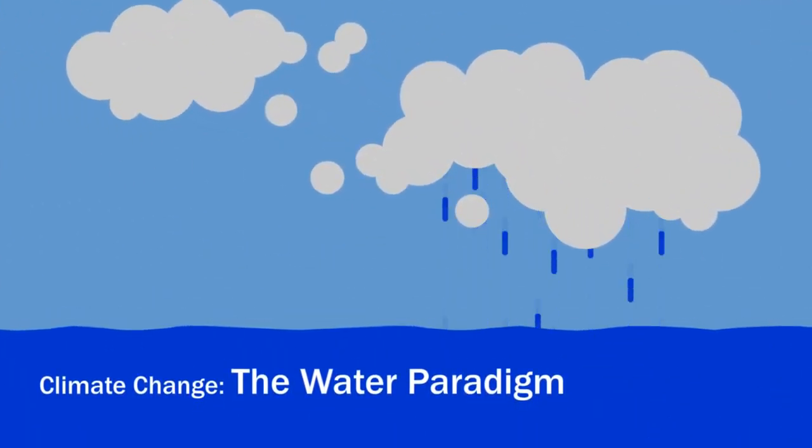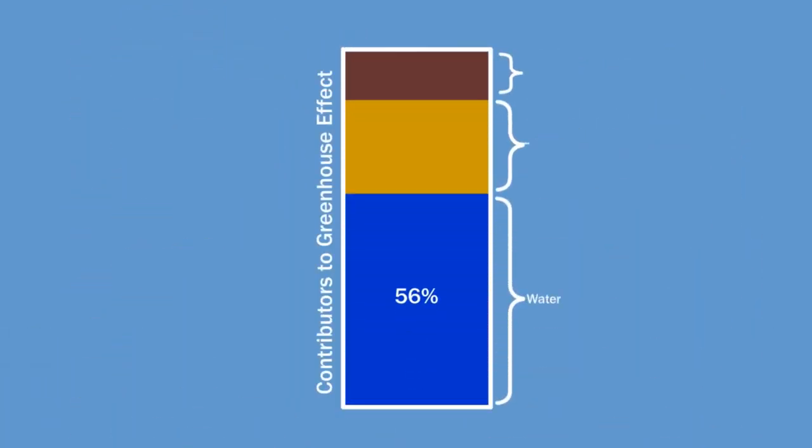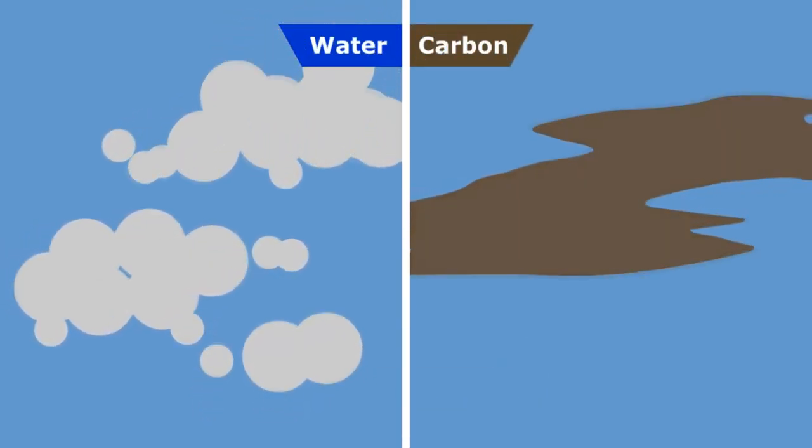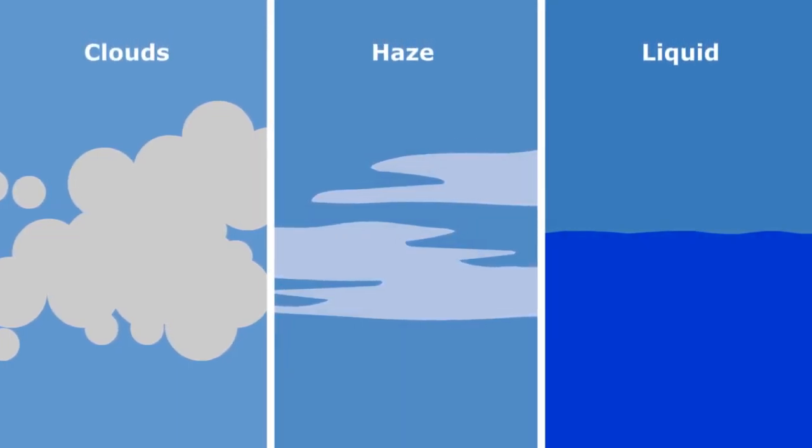One of these things is water. Water is actually the dominant greenhouse gas, but its global effects are difficult to measure because it doesn't spread out evenly in the atmosphere like carbon does. Its effect on temperature also depends on the many forms it takes.